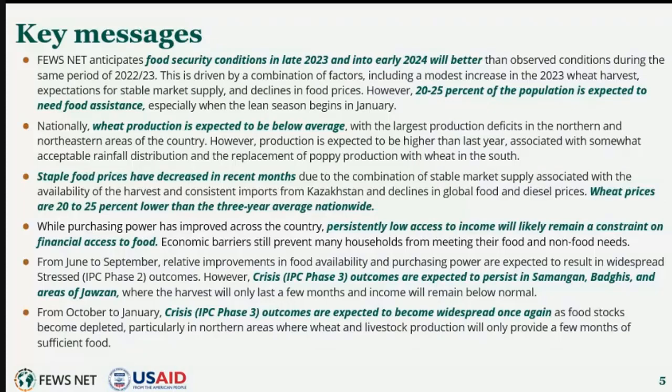Taking a look at FEWS NET's key messages for our outlook through January 2024: overall, FEWS NET anticipates acute food security conditions in late 2023 into early 2024 to be better than those observed during the same period of 2022–2023. This is due to a combination of factors including a better wheat harvest than in 2022, expectations for stable food market supply, and declines in food prices. However, due to declines in livestock herd sizes from consecutive droughts and continued economic barriers in the country, large-scale improvement in acute food insecurity conditions is not likely.